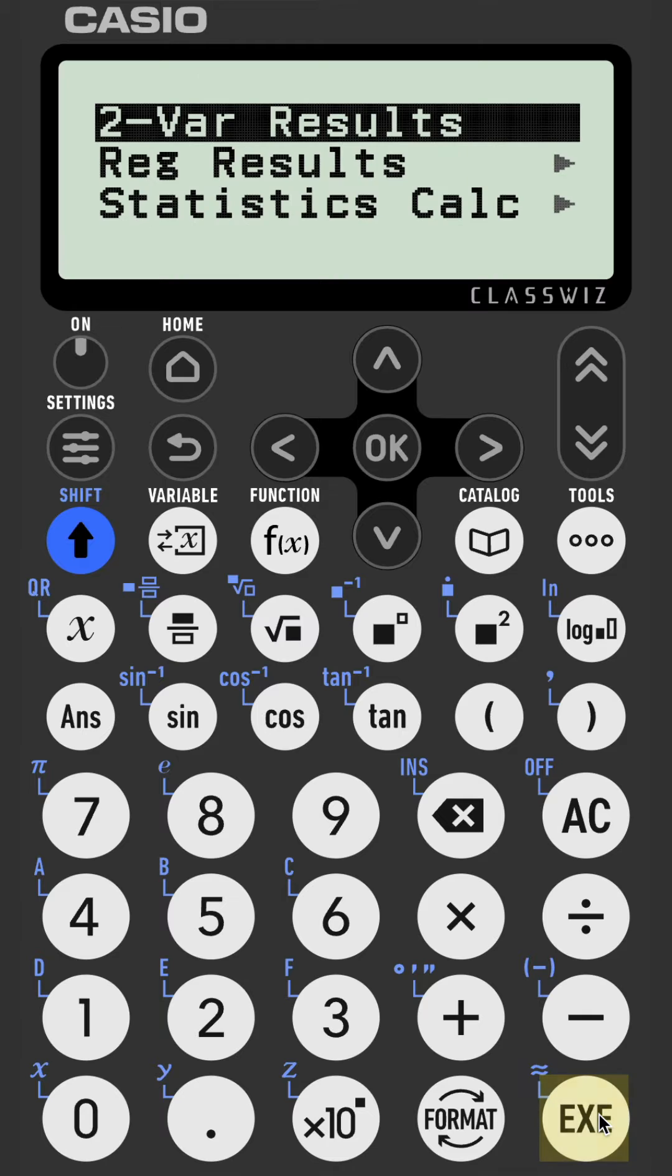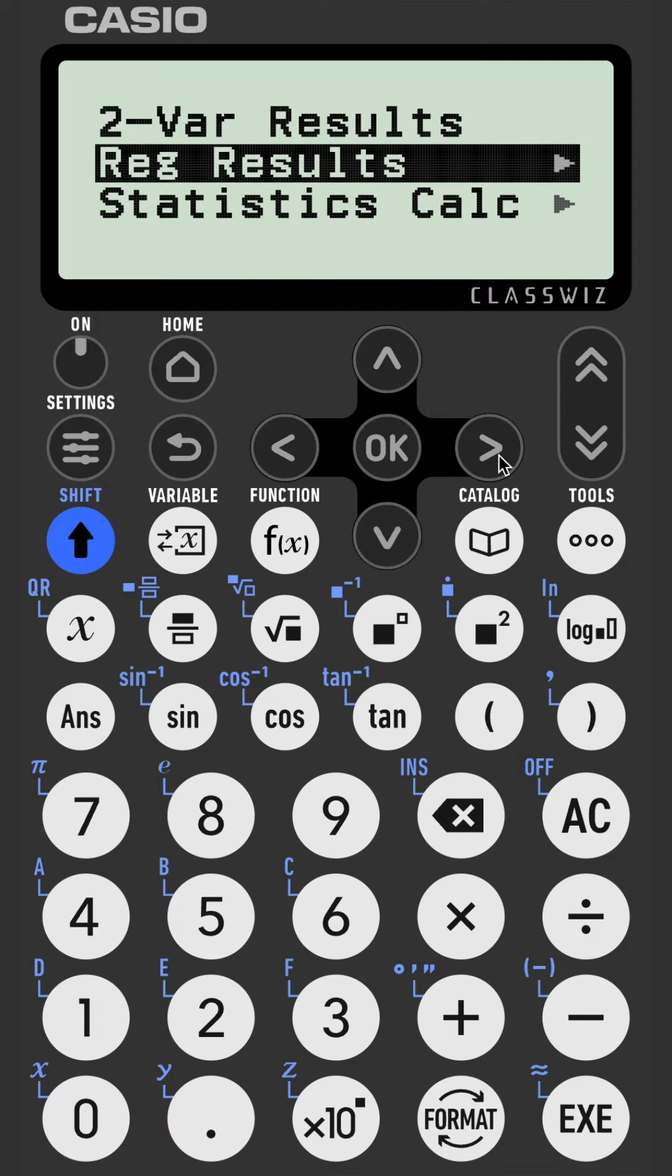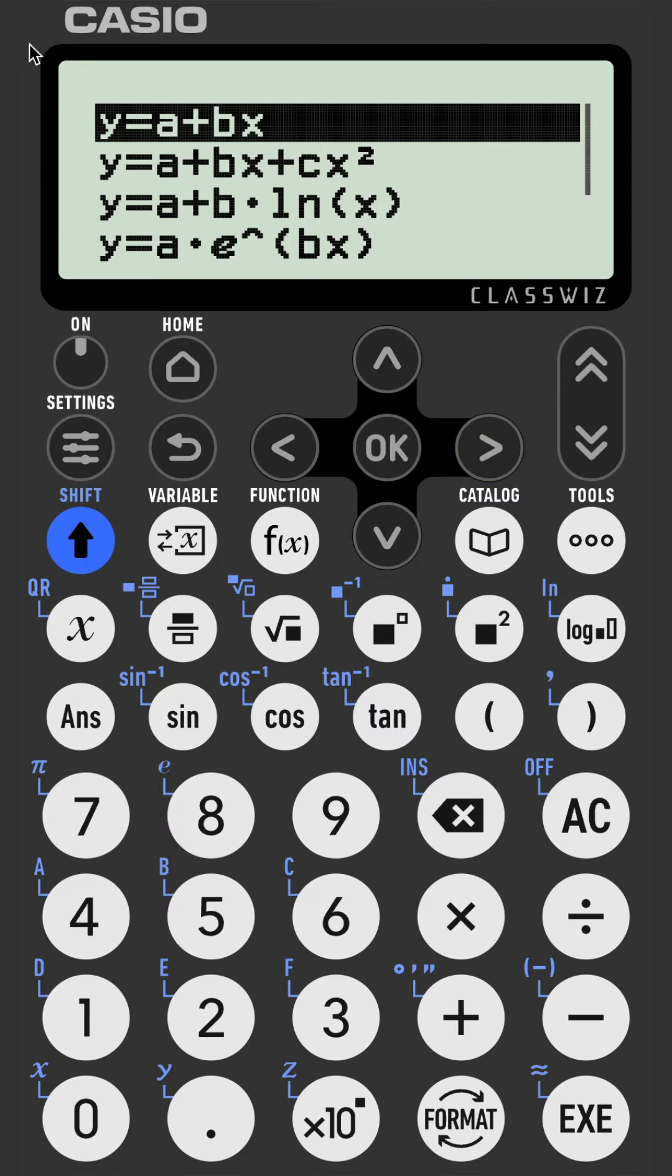And we want reg results for regression results. And as we have a straight line, we want the first option there.